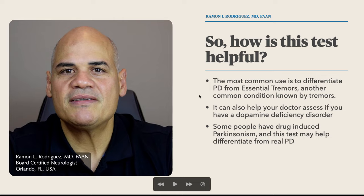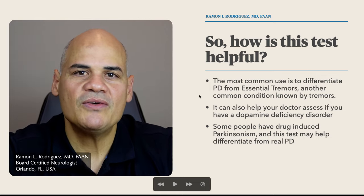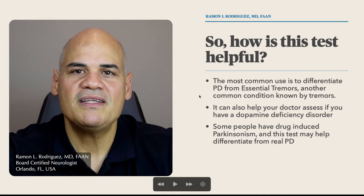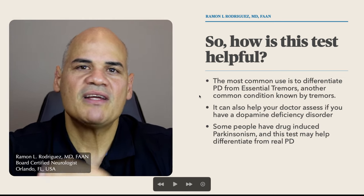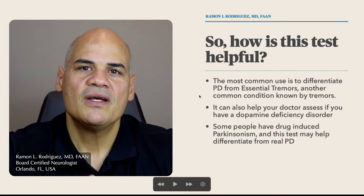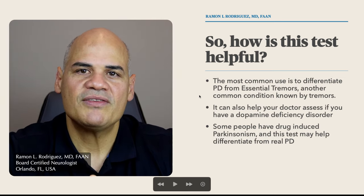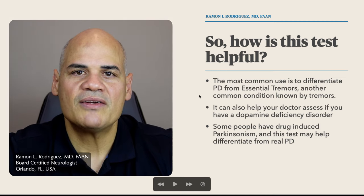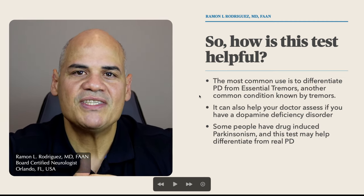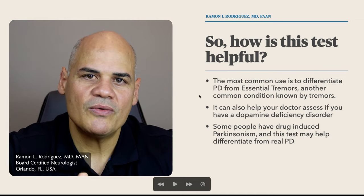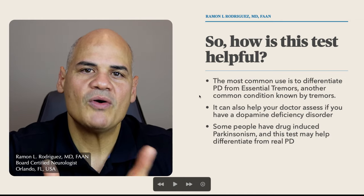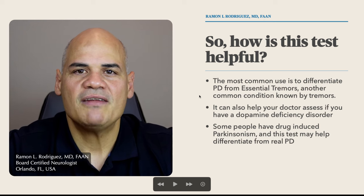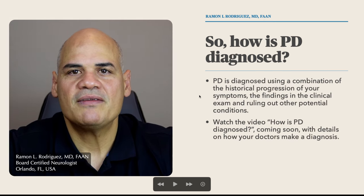So how is this test helpful? The most common use is to differentiate people with Parkinson's disease from essential tremor, which is another condition commonly associated with tremors in the hands. It can also help your doctor assess if you have a dopamine deficiency disorder, and it may help differentiate drug-induced Parkinsonism from Parkinson's disease.